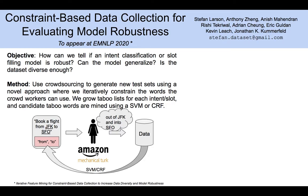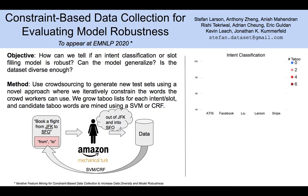A model will be robust if it can handle these different variations. To evaluate, we collected new test sets for existing intent classification and slot filling datasets. We collected datasets using 0, 2, 4, and 6 taboo words.